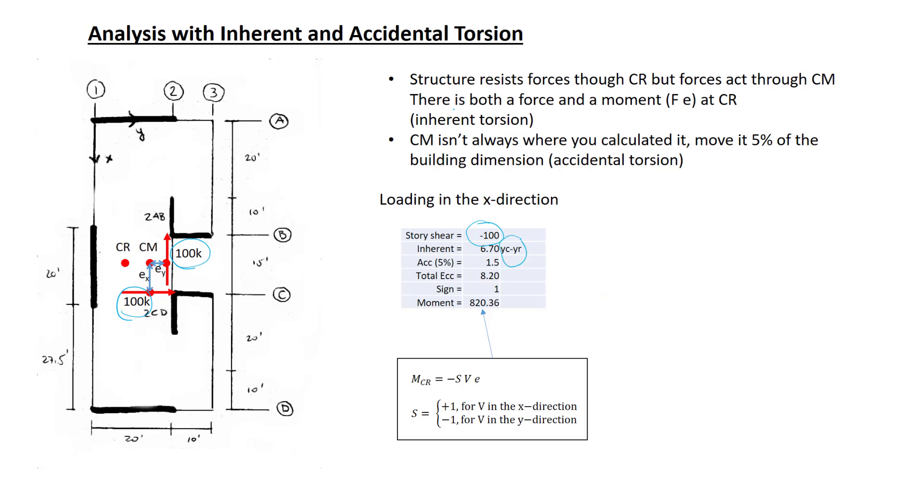The inherent eccentricity is the difference in y-coordinates of the center of mass and the center of rigidity. It's positive here, so this is the inherent eccentricity. The accidental eccentricity is already shown in the figure. That's 5% of the building dimension. Add these two up and I have a total eccentricity of 8.2 feet in the positive y-direction.